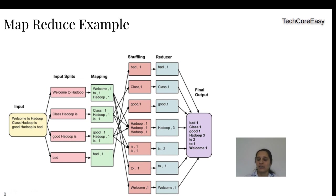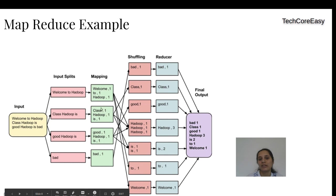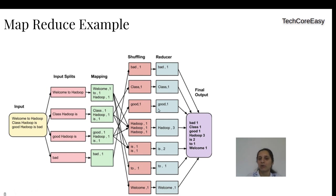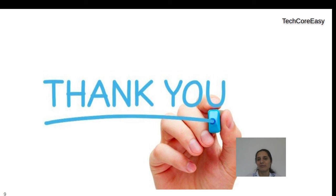If you have more mappers or reducers than your cluster can handle, performance does not automatically increase. For example, if your cluster can execute four mappers at a time but you force eight, the first four execute and then the next four follow — there is no parallelism gain. Performance depends on data size, and you need to calculate the right number of mappers and reducers. Setting the maximum number does not mean your job will finish faster. I hope you liked our video — please like and subscribe to TechCore Easy!